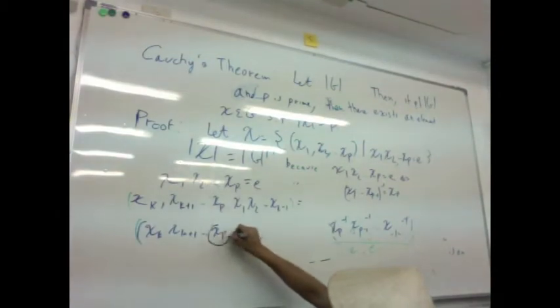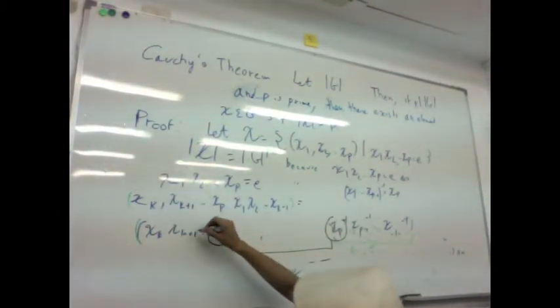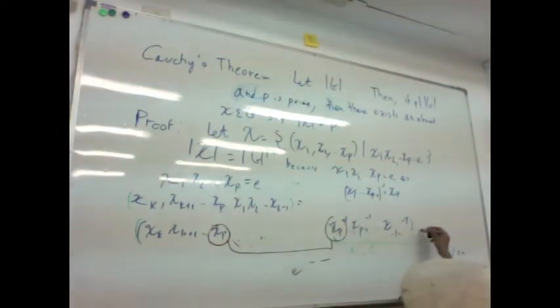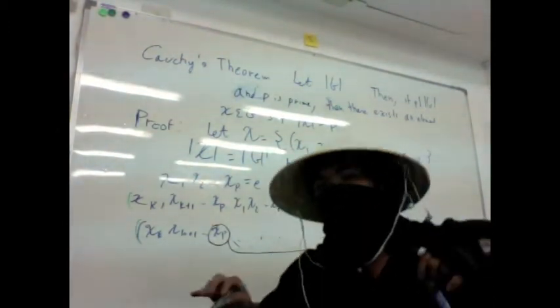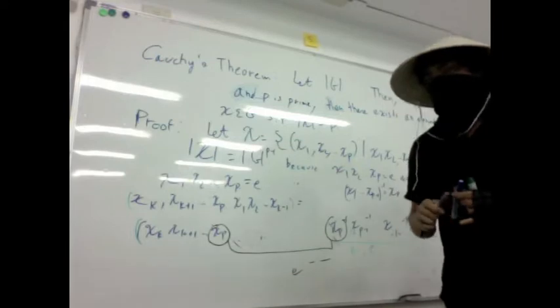But look at this here, these things are the corresponding inverses, so this guy will be equal to e. So therefore it preserves the operation, it preserves it. Okay, we're going to use this factor and we can prove it is an equivalence, so it has to partition.